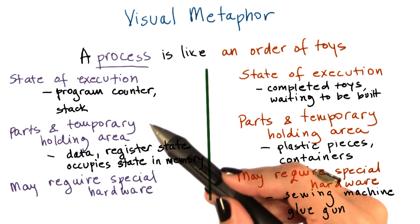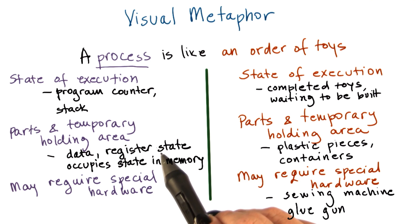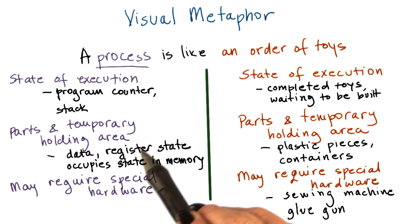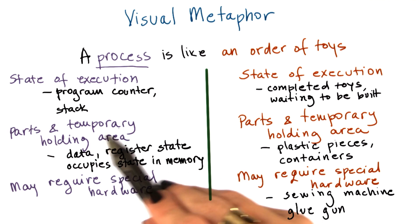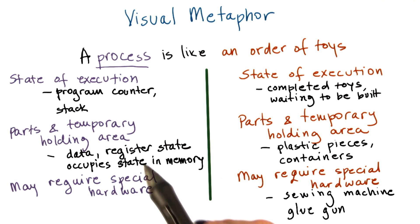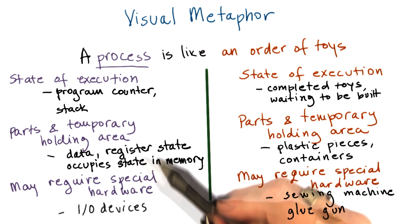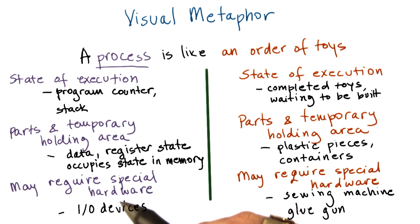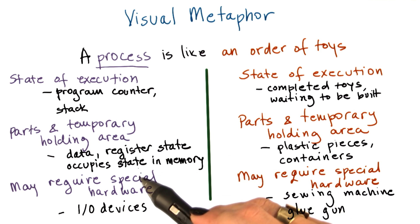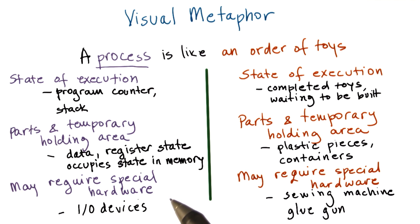In order to execute, the process needs some data, there's some state in registers, and it also has some temporary holding area — for instance, it occupies state in memory. Finally, executing a process may require some special hardware, like IO devices, like disks, or network devices.